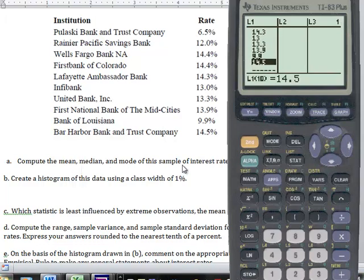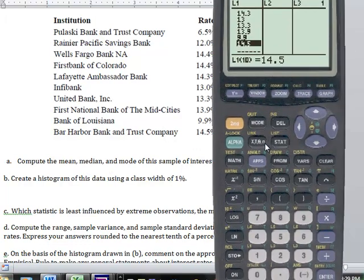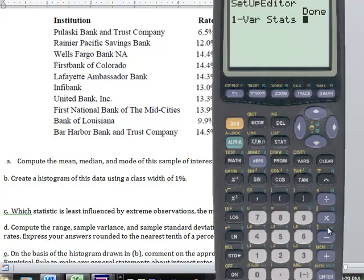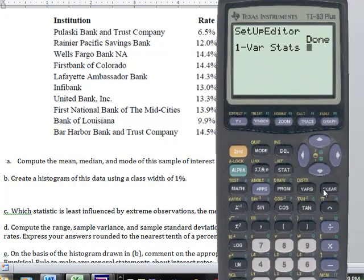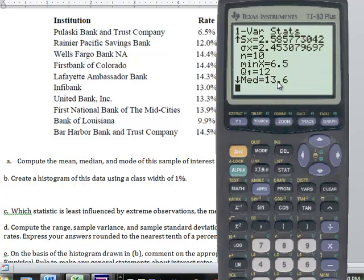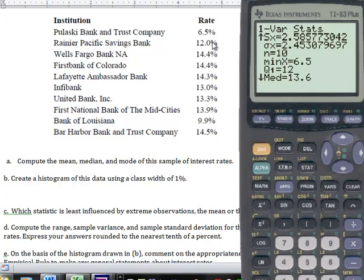Now compute the mean, median, and mode for the sample of interest rates. Press STAT, scroll over to CALC, and press ENTER. Here it is. Our mean is 12.62%. Scroll down, there's our median, 13.6%. And the mode, we can just look at that. With a small data set, it looks like 14.4% comes up the most, so the mode would be 14.4%.